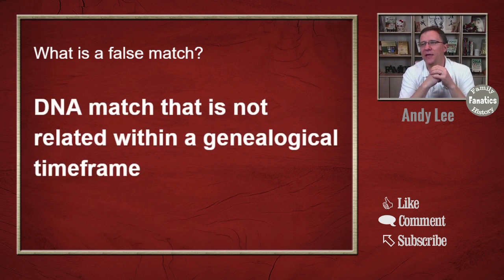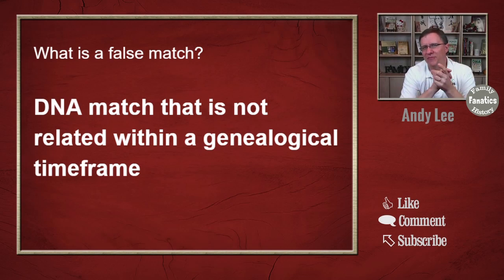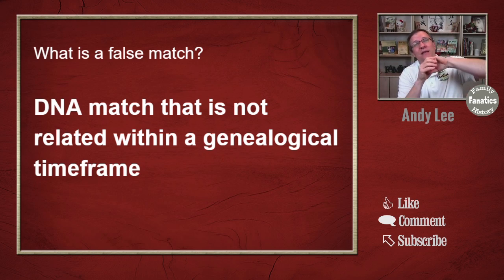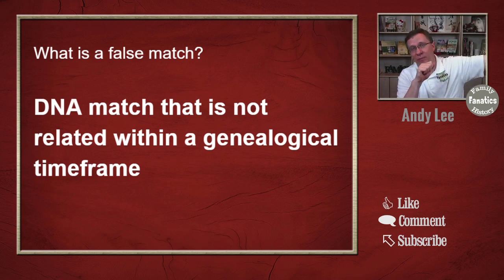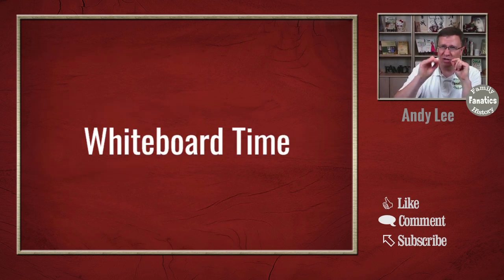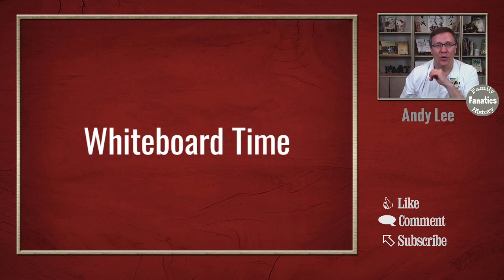What is a false match? A false match is a DNA match that isn't really related within a genealogical timeframe. This could be because of chance, or it could be because you are related, but everybody in that population has that same DNA — so it's too far back, beyond where any records can link you together. It might be 500 or a thousand years before you have a common ancestor. To illustrate this, let's go to the whiteboard.